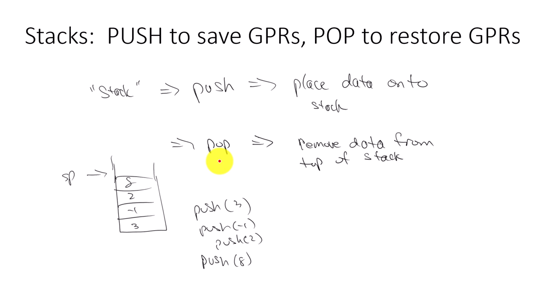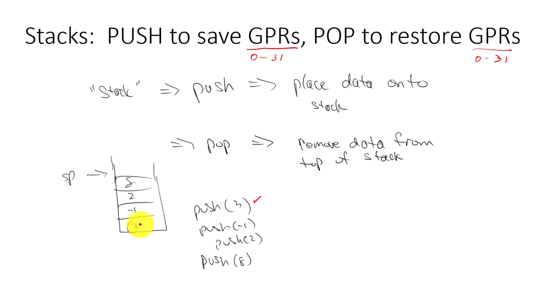We're going to push our general purpose registers — GPRs — which identifies registers 0 through 31, those 32 registers. As a reminder from the Data Structures and Algorithms course: whenever you do a push, that value goes onto the stack. When you do another push, it goes on, and another push places that value on, and so forth.